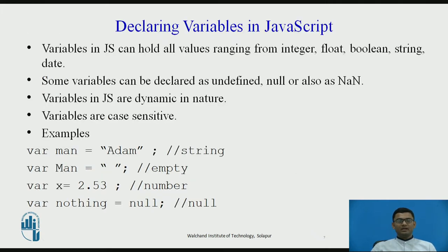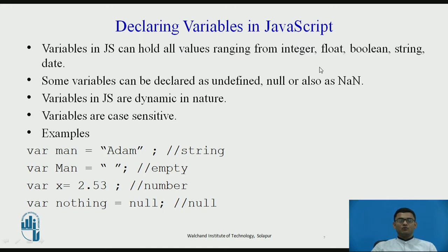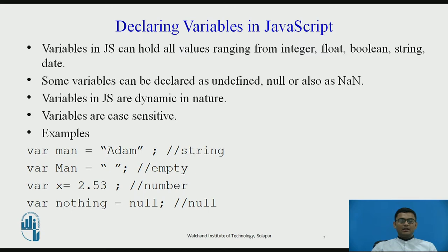How do we declare variables in JavaScript? In JavaScript, variables can hold all these values ranging from integer, float, boolean, string, date, and so on. Some variables can be declared as undefined or null, and also as not a number (NaN). If you declare a variable as not a number, the type of the variable will still be number but the value assigned will be NaN.